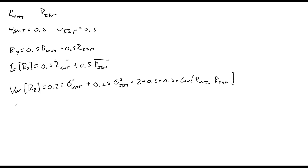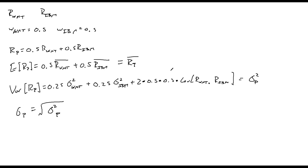Our standard deviation would be the square root of our portfolio variance. So that would be our expected portfolio return, portfolio variance, and standard deviation. Now I'm going to go to our Python Jupyter notebook file.